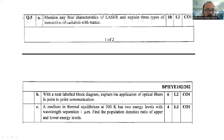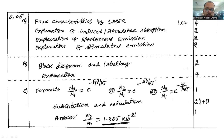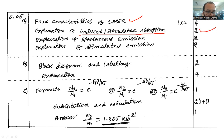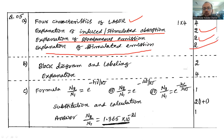Question number 5a: Mention any 4 characteristics of laser and explain 3 types of interaction of radiation with matter. Laser stands for Light Amplification by Stimulated Emission of Radiation. You are expected to explain 4 important characteristics of laser for 4 marks, then induced or stimulated absorption for 2 marks, spontaneous emission for 2 marks, and stimulated emission for 2 marks.